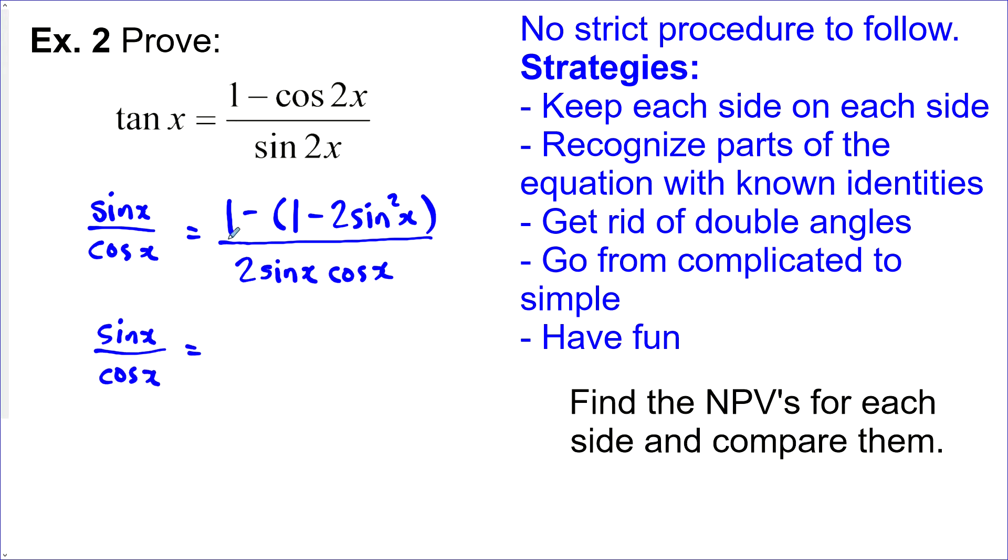Now we've got one minus one, that's gone. We've got negative and negative, so this is now positive: 2sin²x over 2sin x cos x. If things are looking good, we can get rid of the 2, get rid of one sine in the numerator with one sine in the denominator. That leaves us with one sine in the numerator, one cos in the denominator. So we have the left side equal to the right side.